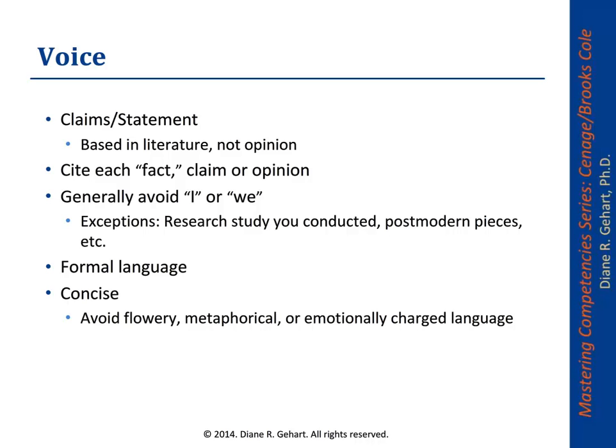When you're doing your basic literature review in APA style, you will need to cite all of your claims and facts, and avoid opinion. Generally, you will avoid the terms I or we. There are some exceptions — such as when you're doing a research study and need to describe what you do in active voice, or if you're doing a postmodern type paper. In general, you will use very formal and concise language. You will not be using flowery, metaphorical, or emotionally charged language — it's a scientific language. The idea is to present what's known in the literature without infusing your opinion. I always say if it's dry and boring, you're close to APA style.